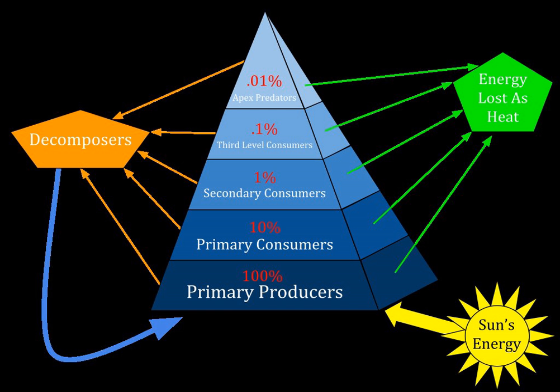A pyramid of numbers shows graphically the population of each level in a food chain. It is an upright pyramid in an ecosystem where usually the producers are more in number than any other trophic level. This shows the number of organisms in each trophic level without any consideration for their size. This type of pyramid can be convenient, as counting is often a simple task and can be done over the years to observe the changes in a particular ecosystem. However, some types of organisms are difficult to count, especially juvenile forms. Unit: number of organisms.